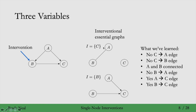The intervention on c told us there is an edge between a and b but not the direction. This intervention on b tells us there's no edge from b to a, so there must be an edge from a to b. Using these two interventions, we've discovered the true causal graph. This shows that two interventions are sufficient to identify the worst-case three-variable graph, and you can show that any other two interventions would also be sufficient for the three-variable case.